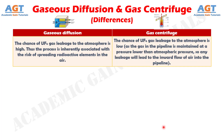Difference number 5. In gaseous diffusion, the chance of UF-6 gas leakage to the atmosphere is high. Thus the process is inherently associated with the risk of spreading radioactive elements in the air. In gas centrifuge, the chance of UF-6 gas leakage is low, as the gas in the pipeline is maintained at a pressure lower than atmospheric pressure, so any leakage will lead to the inward flow of air into the pipeline.